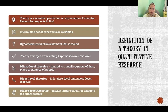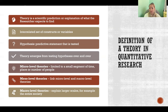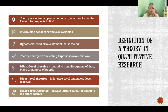Once a theory exists, it can be used as the foundation for further research, because now there's an expected relationship between variables. A theory involves different constructs or variables, and there's a stated relationship describing what is expected to happen with the interaction between those constructs or variables.